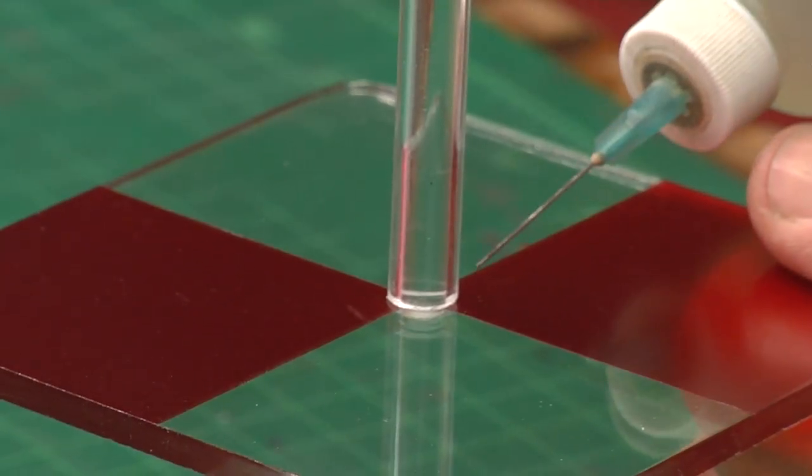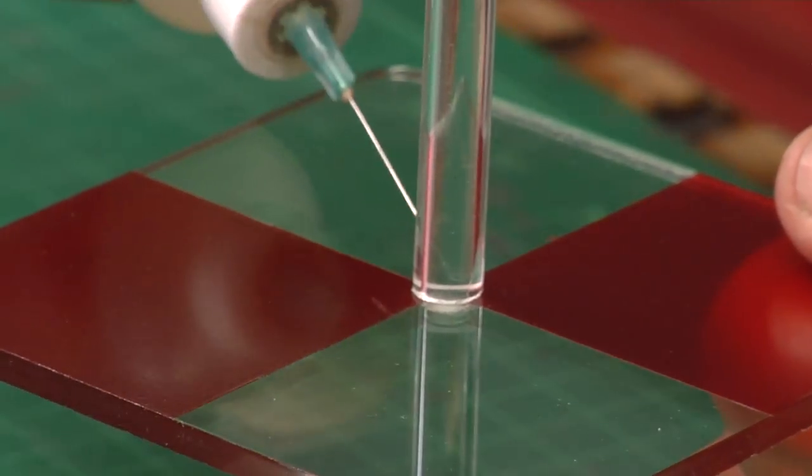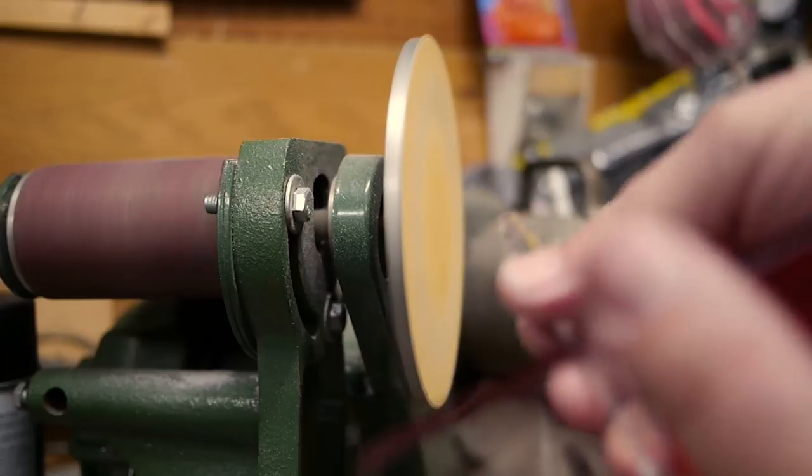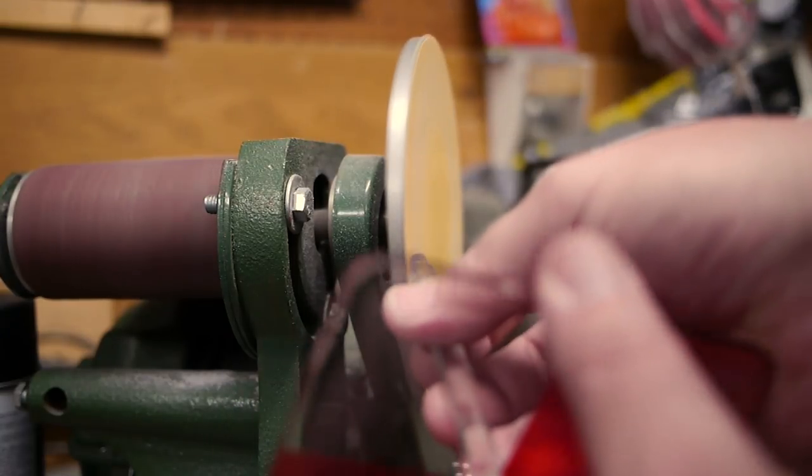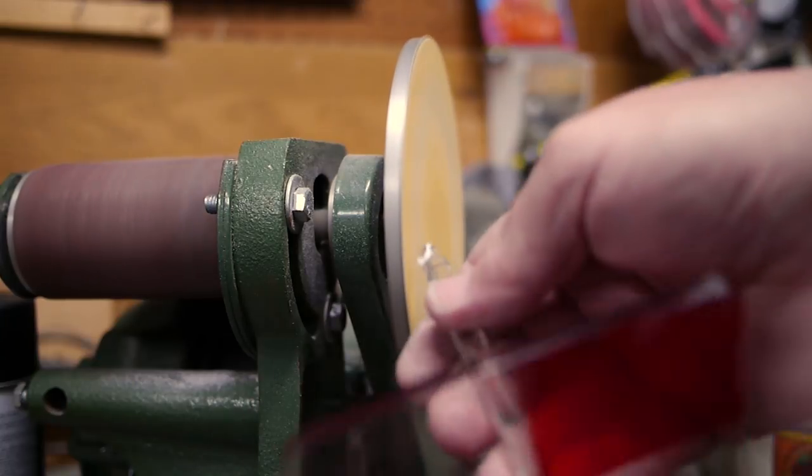I glue all the parts in place with some Weldon 4, which is a water thin solvent glue, and it'll seep in between the seams of the plastics. The extra bit of rod that sticks out the bottom will fit into any quarter inch hole in the main boards. And I tapered the end of the rods on the disc sander, so it's easier to move it into the different holes while actually playing the game.